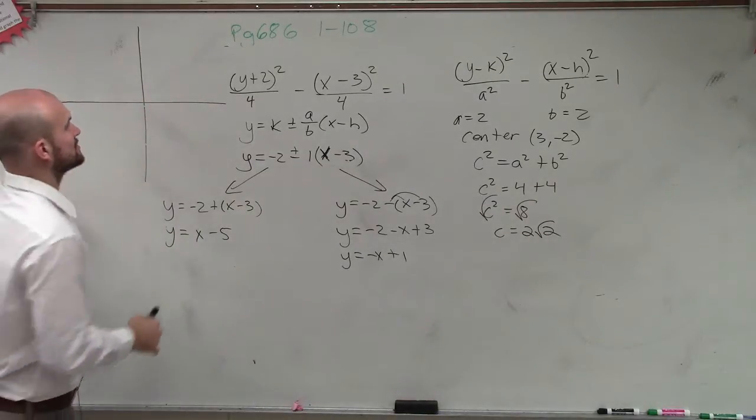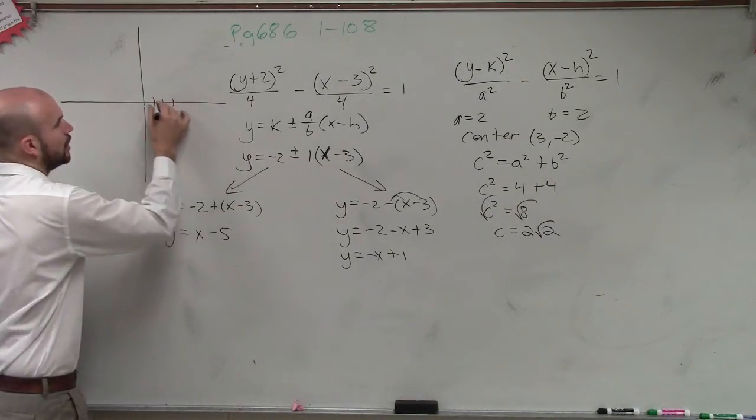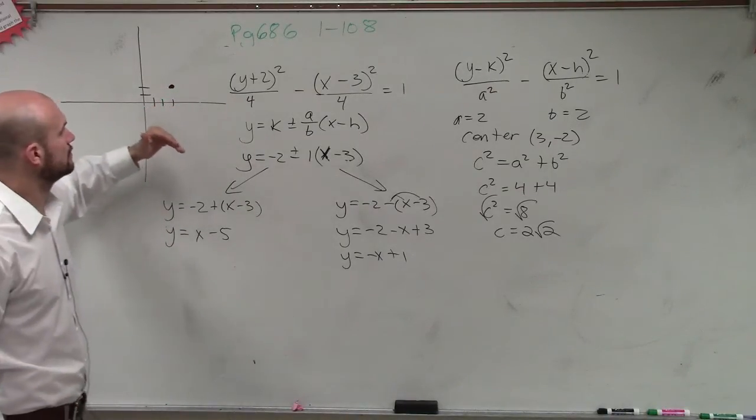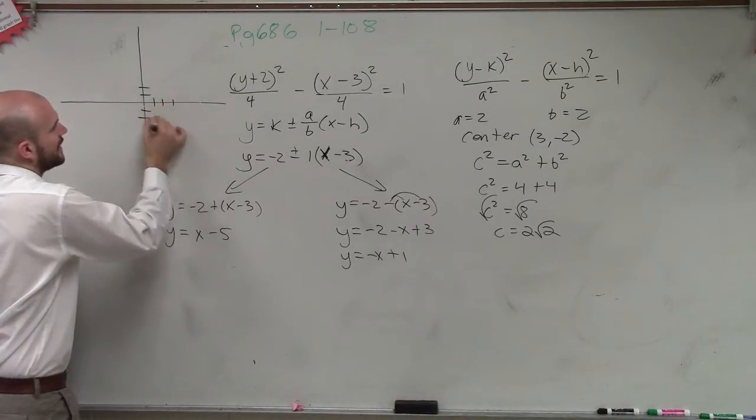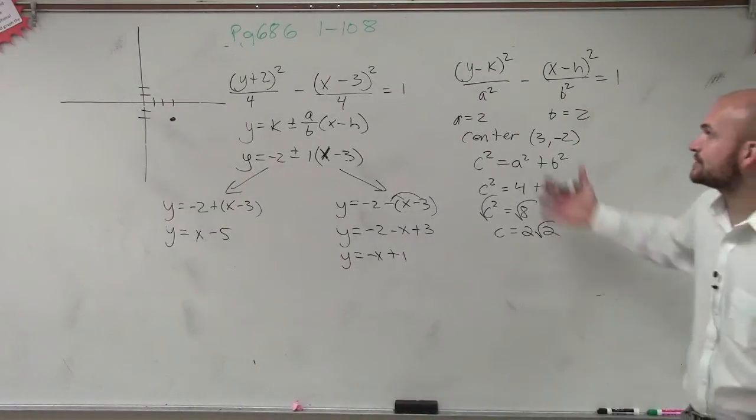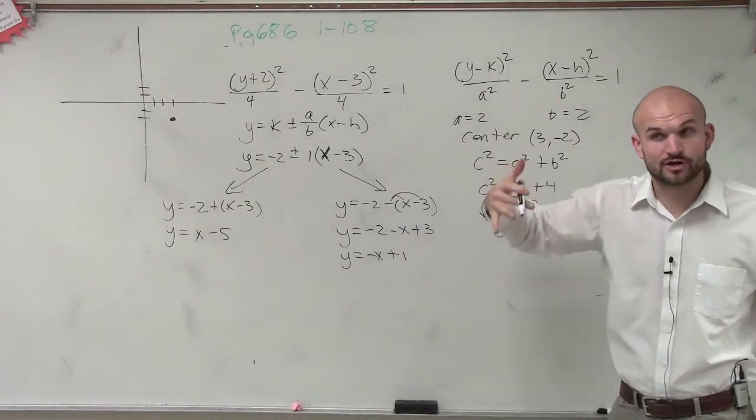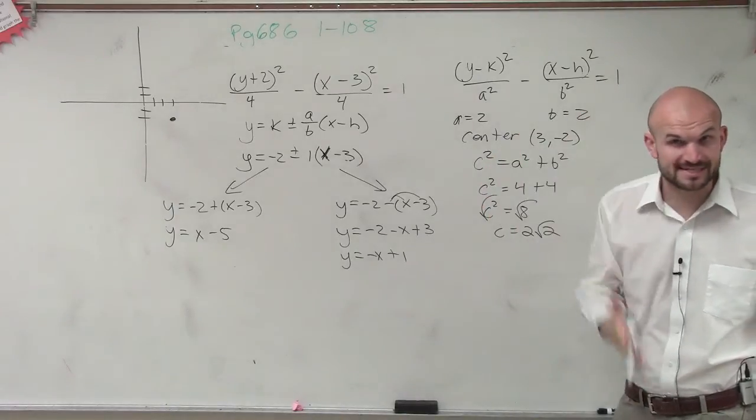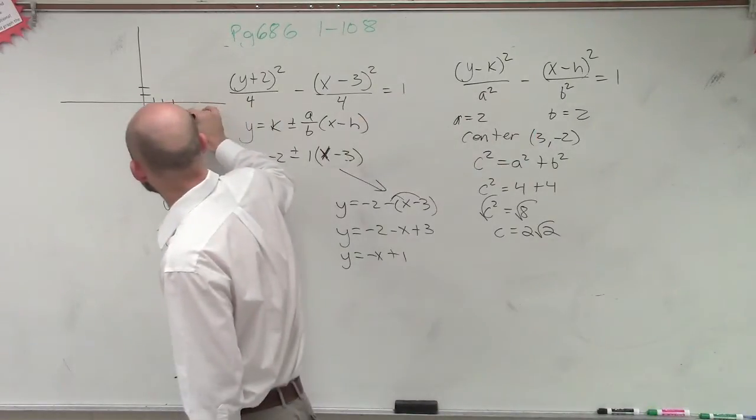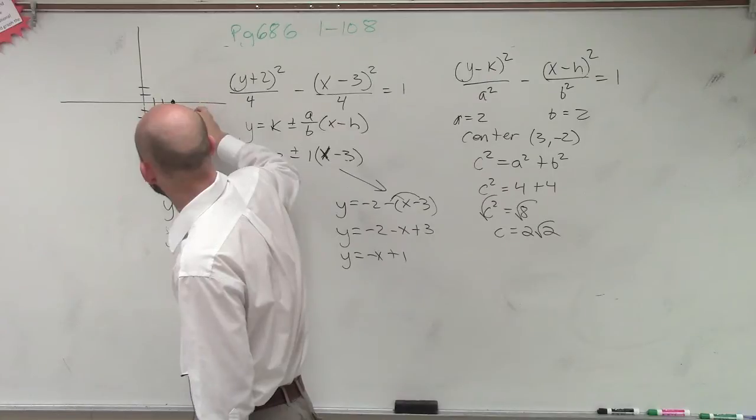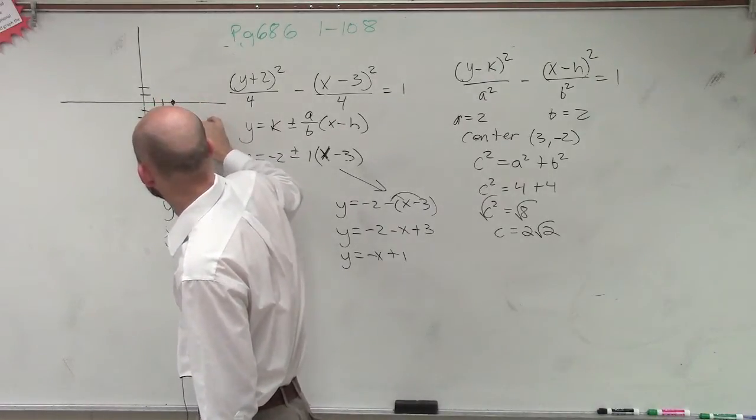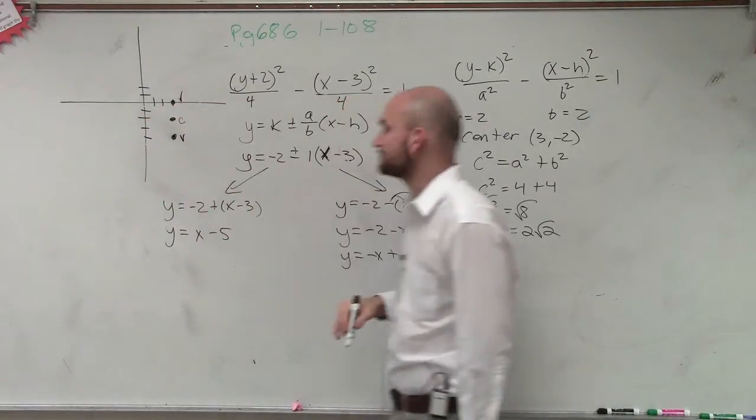So let's go to the center first, which is at 3, negative 2. So we have 3 comma negative 2, that's our center. Now remember, we determine, is this a horizontal or a vertical transverse axis? Vertical. So therefore, our vertices are going to be up and down. So our a is a distance of 2. So that means if this is my center, my two vertices are going to be up 2 and down 2.